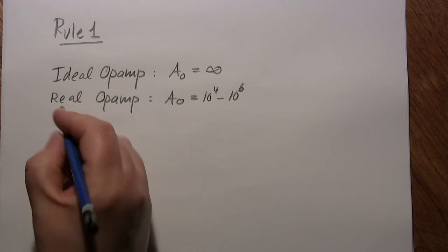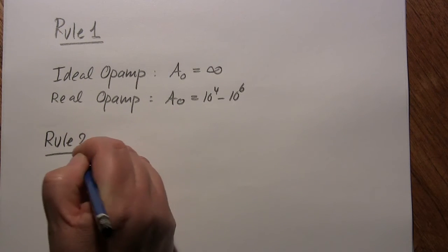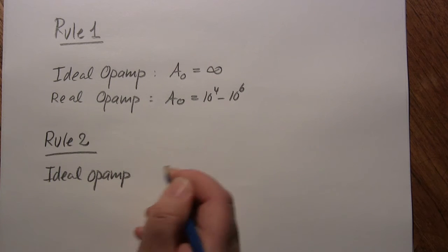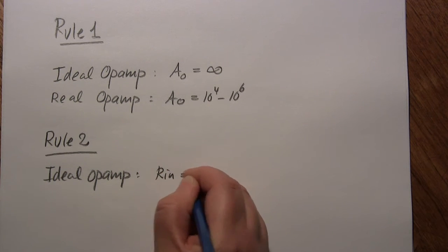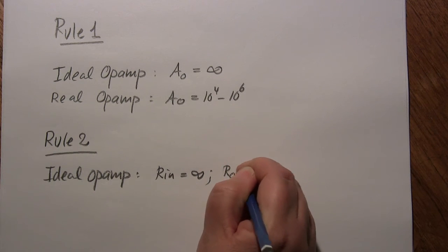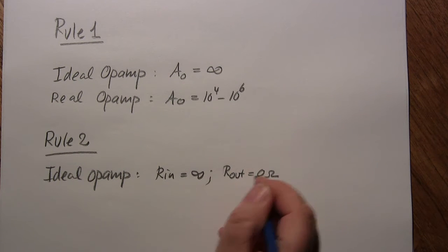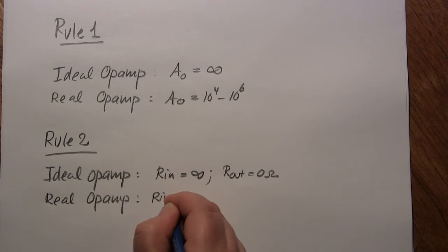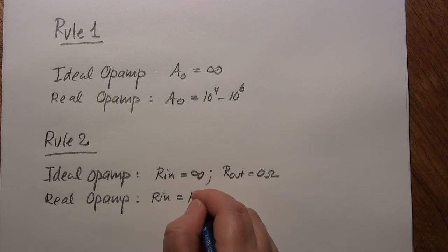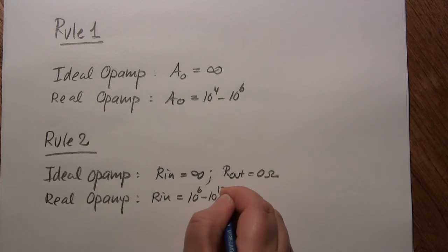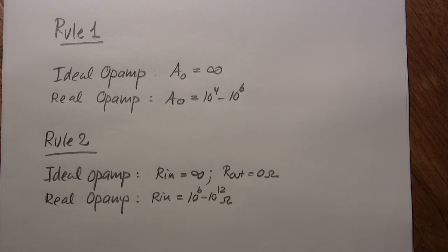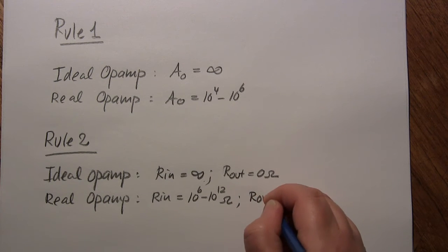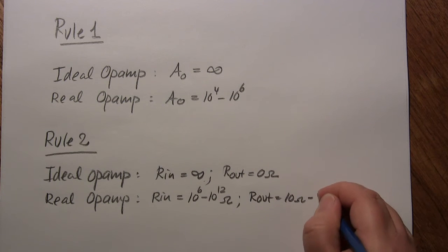Rule 2 states that in the ideal op-amp, R-in is infinite and R-out is 0 ohm. The real op-amp has more modest values of 10 to the 6th to 10 to the 12th ohm — very large values but still not infinite. And R-out for the real op-amp is in the range of 10 ohm to about 1 kilo-ohm.